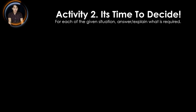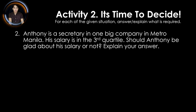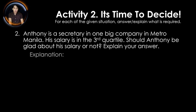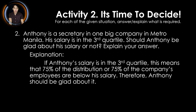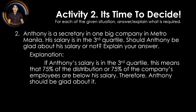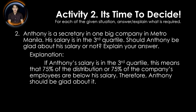For the second situation: Anthony is a secretary in one big company in Metro Manila. His salary is in the third quartile. Should Anthony be glad about his salary or not? If Anthony's salary is in the third quartile, this means that 75% of the distribution — or 75% of the company's employees — are below his salary. Therefore, Anthony should be glad about it. Imagine if there are 100 employees in the company, 75% of them earn below Anthony's salary.